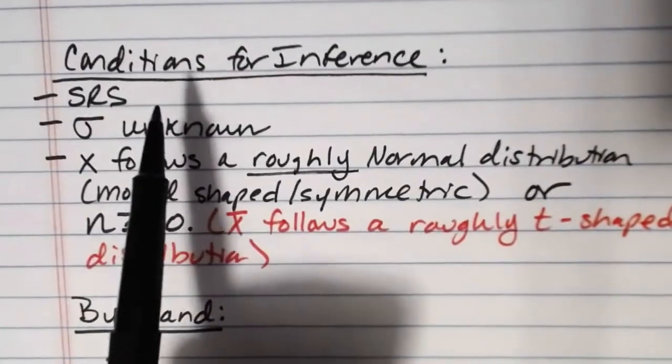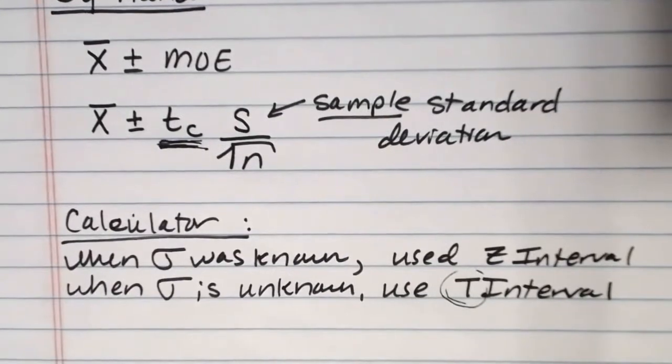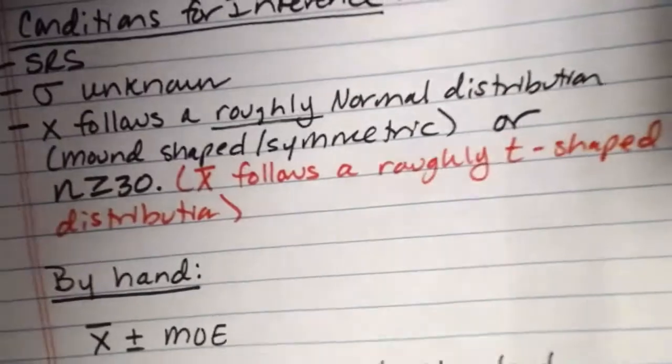But we do still have to check our conditions for inference first, so we'll check those. Then we'll put everything into the calculator and we'll be able to get and interpret our interval just like we did before. The basic confidence interval process is the same. It's just the interval that we use that changes. And you'll find that that's true throughout this entire chapter. Basically anytime we're doing confidence intervals the process is basically the same. It's just we're using different intervals each time.